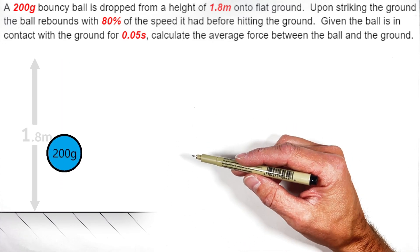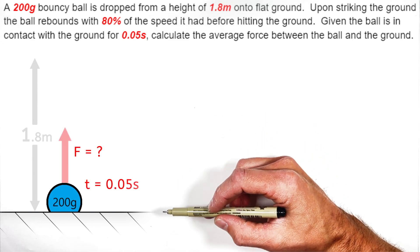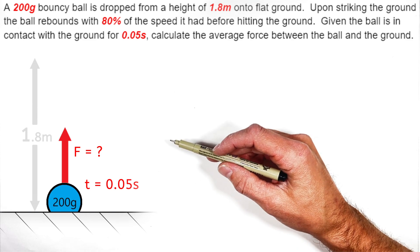Now, given the ball's in contact with the ground for 0.05 seconds, we're going to calculate the average force between the ball and the ground when that collision occurs.